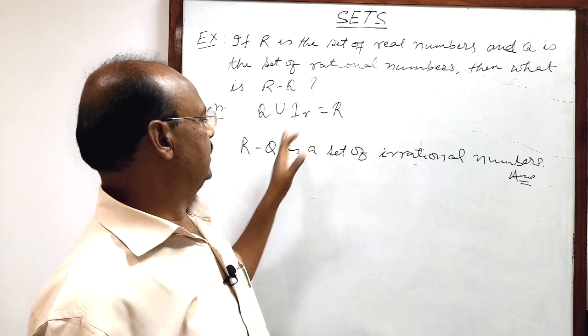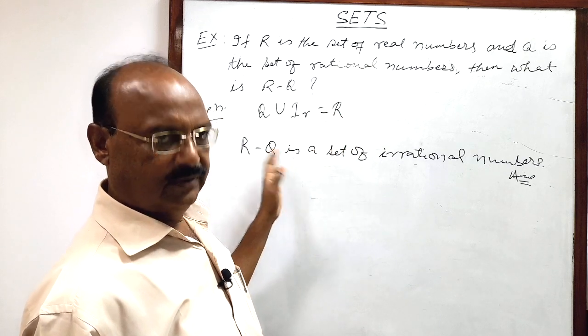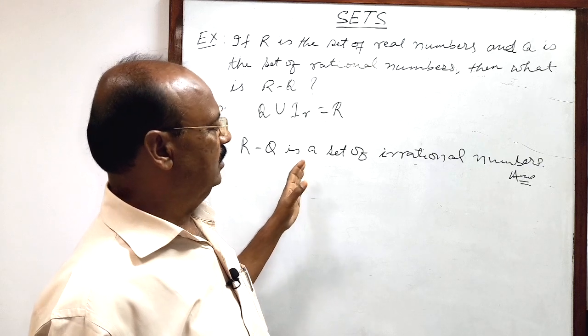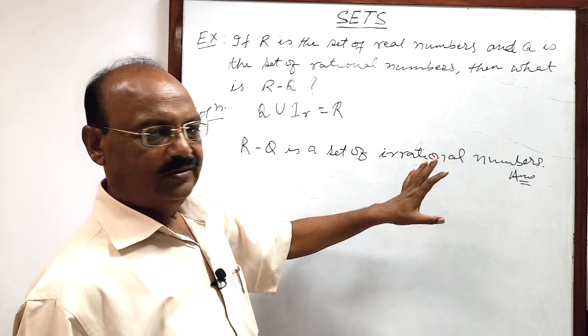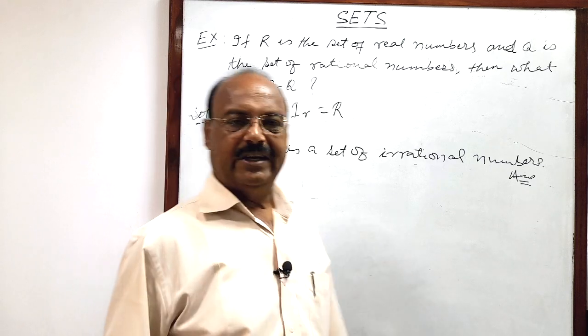From the set of real numbers if rational numbers have been removed or subtracted then we will get set of irrational numbers. That is all. Very simple, hope you have understood very well.